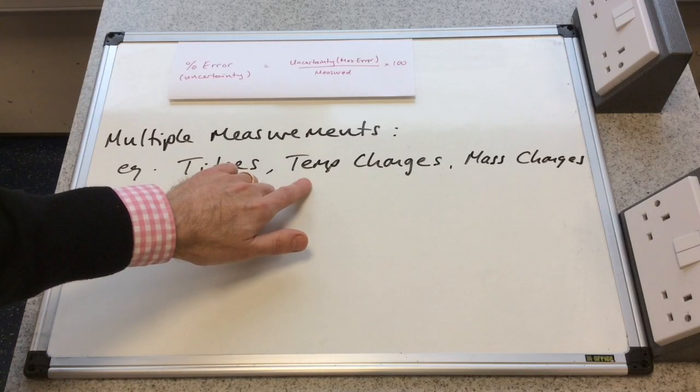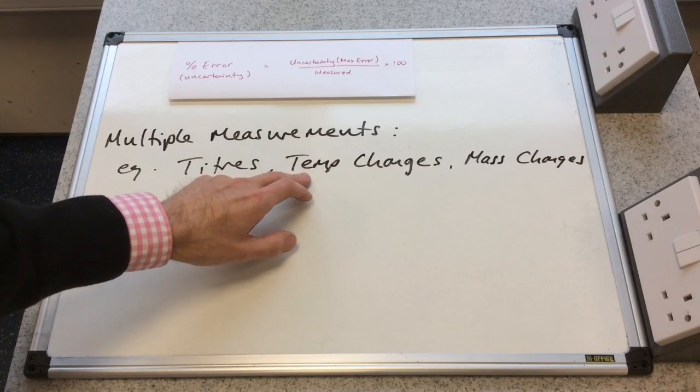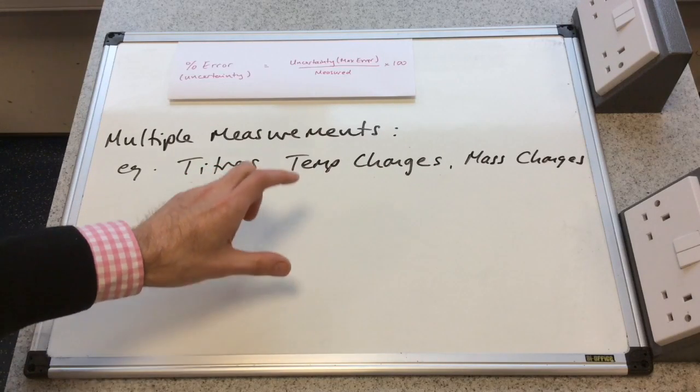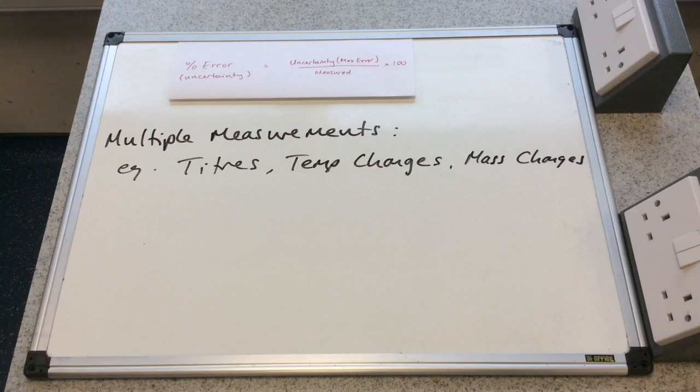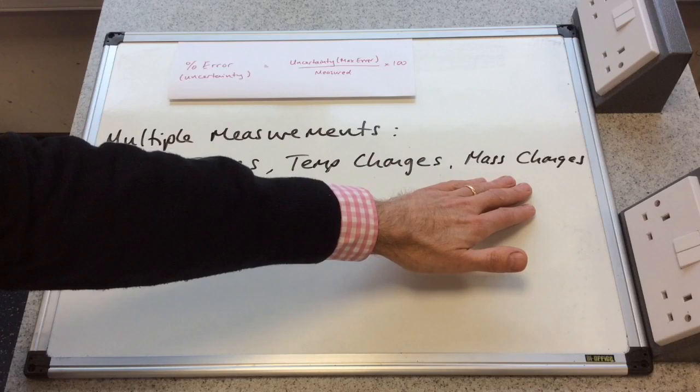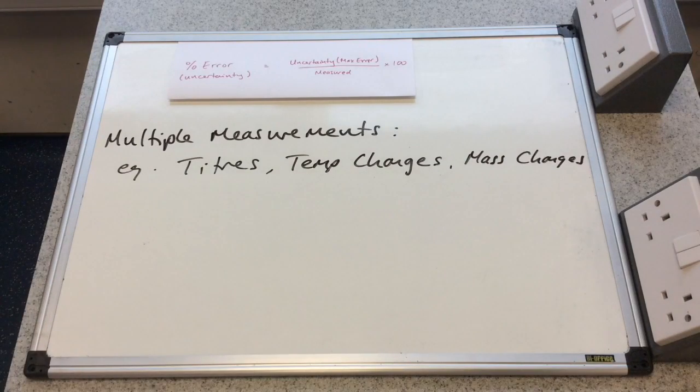Temperature changes in reactions. Again, you have an initial temperature and a final temperature, and again you've got two readings, both with errors associated, and the same with mass changes in chemical reactions.